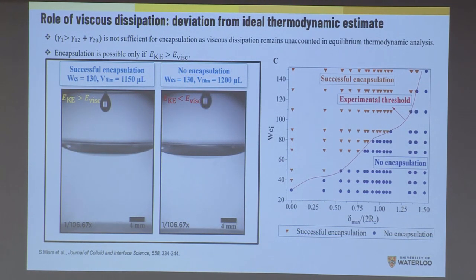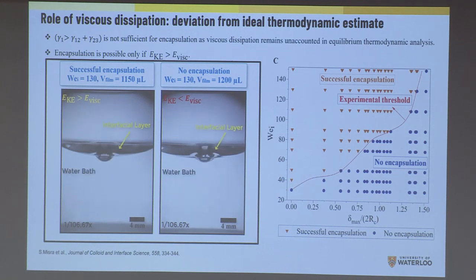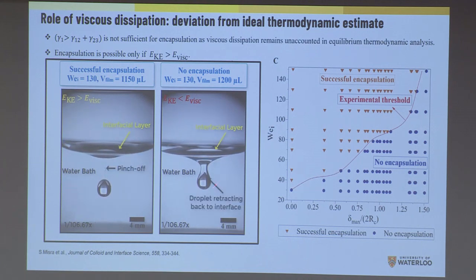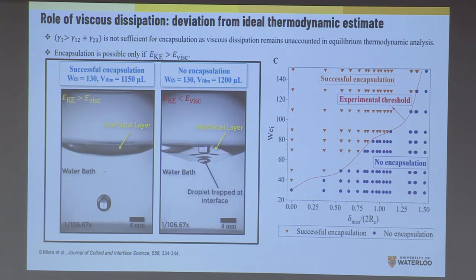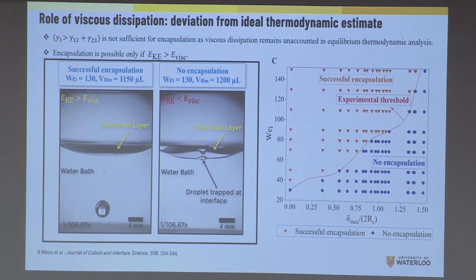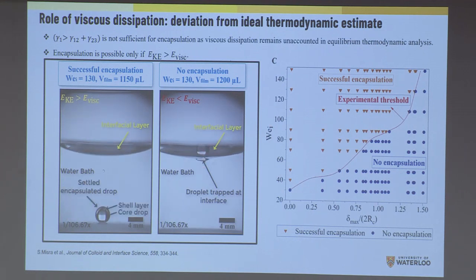Why this happens is dictated by Gibbs free energy — the thermodynamic process. We have three pairs: L1 the core, L2 the interfacial liquid, and L3 the host bath. There are interfacial energies gamma 1-2 and gamma 2-3. The condition for encapsulation must be met for the most stable encapsulated state. However, Gibbs free energy criteria alone is not sufficient. The drop must also have enough kinetic energy to overcome the viscous dissipation of the shell layer.